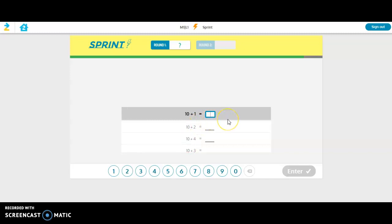10 plus 1 is 11. You would have to manually type it in or you can click down here on the numbers, and when you're finished either hit enter on your keyboard or you can click enter. 10 plus 2 is 12. Let's try to get one wrong. 10 plus 4, oops maybe I said 15. Let's see what happens.